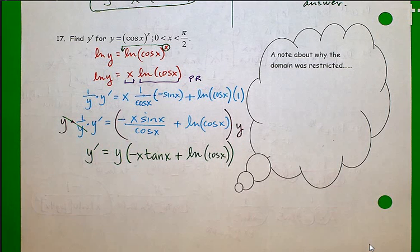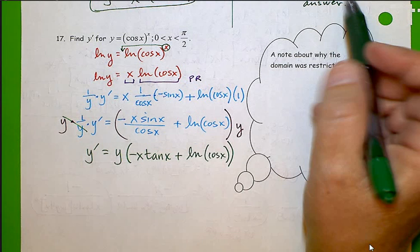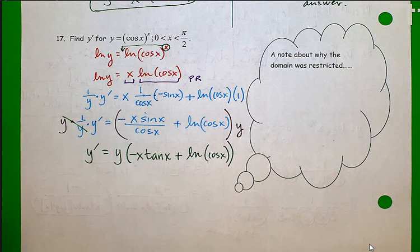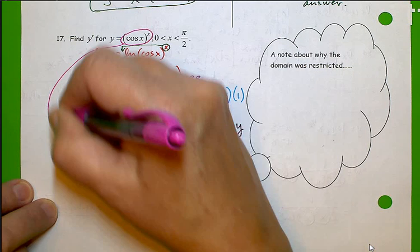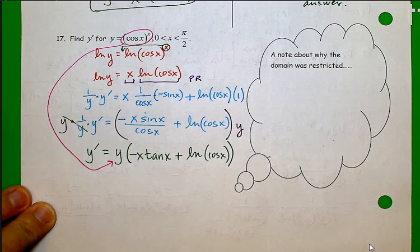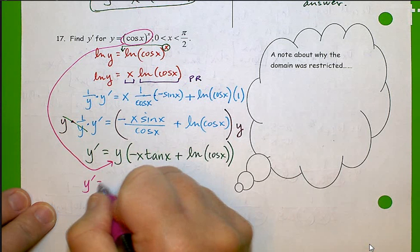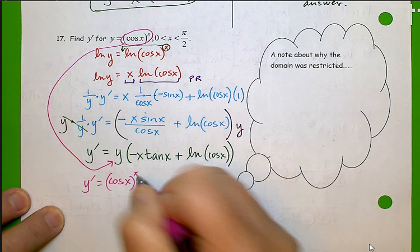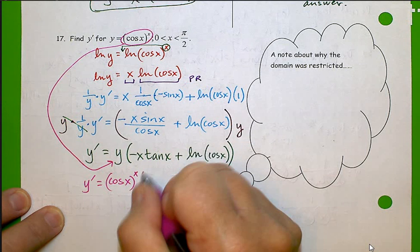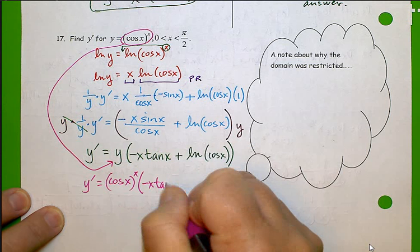And the last step was to substitute to eliminate y in the final answer. y equals cosine x to the x power. So we'll plug that in there. And I get y prime equals cosine x to the x power times negative x tangent x plus natural log cosine x.